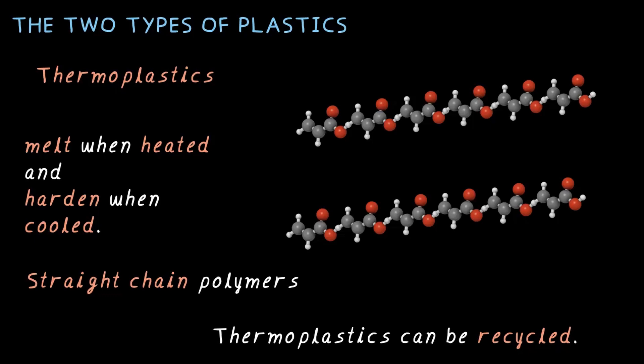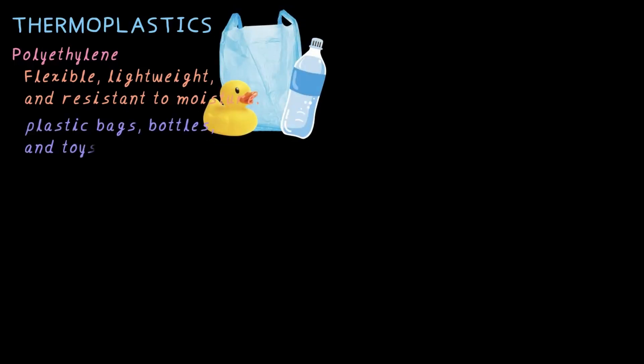Now, let's check out some examples of thermoplastics. Polyethylene is a very common thermoplastic. It is very flexible, lightweight, and resistant to moisture, making it a good candidate for plastic bags, bottles, and toys.